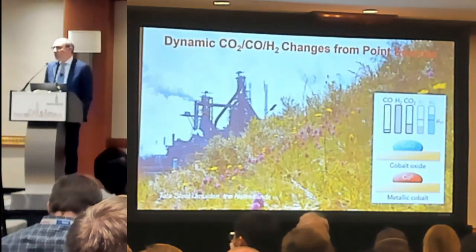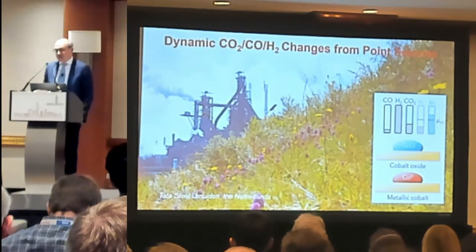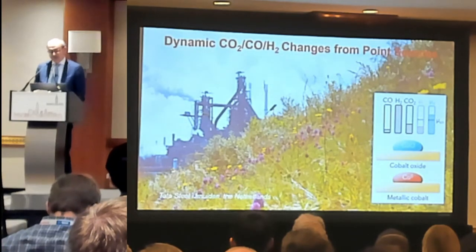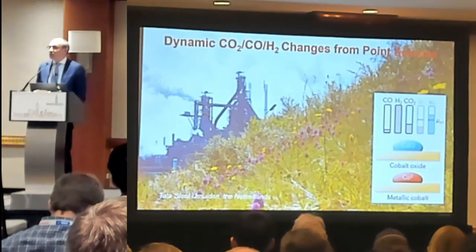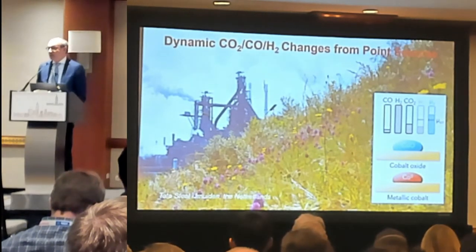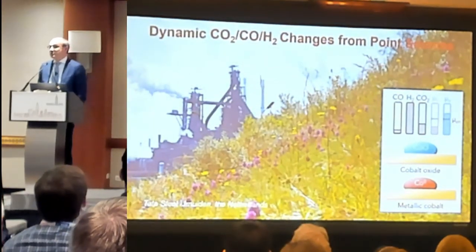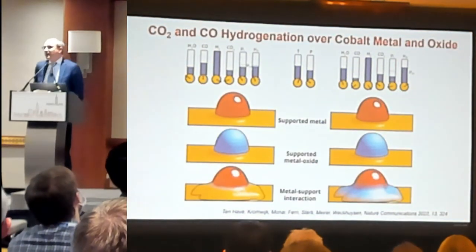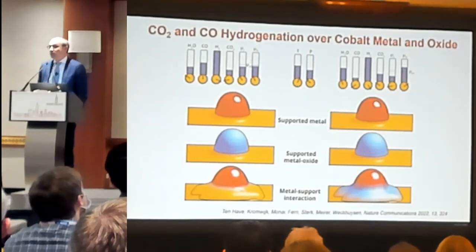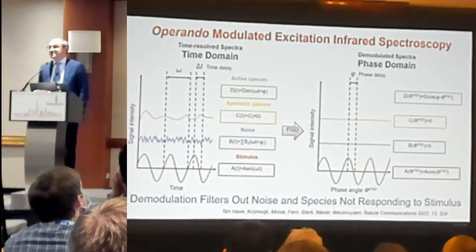One of the catalysts developed for CO hydrogenation, Fischer-Tropsch, is a cobalt-titania system. CO can also be present together with CO2, for example in large industrial units such as Tata Steel, a steel manufacturing plant in the Netherlands. The whole point is that CO and CO2 give different chemical potential to the environment and hence will affect the oxidation state. We are interested in whether it is cobalt metal, cobalt oxide, or a combination, and what CO2 and CO are doing.